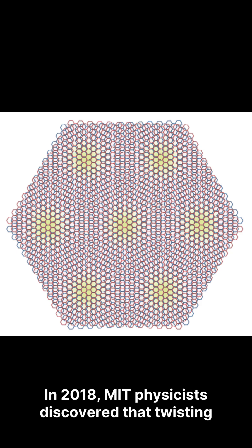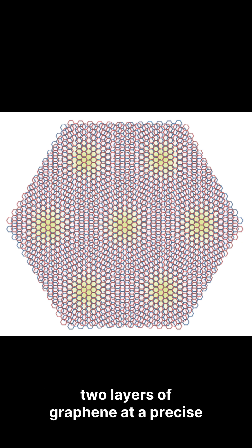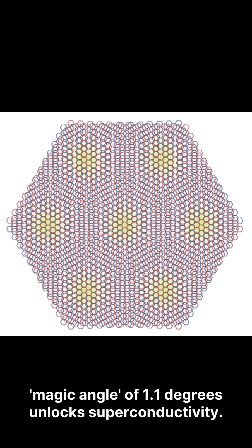In 2018, MIT physicists discovered that twisting two layers of graphene at a precise magic angle of 1.1 degrees unlocks superconductivity.